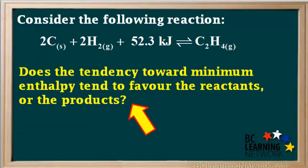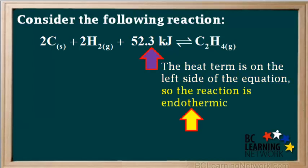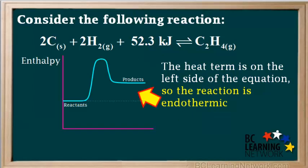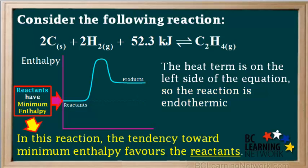Here's another example. Given this equation, will minimum enthalpy favor reactants or products? The heat term is on the left side of the equation, so this means the reaction is endothermic. We can sketch an enthalpy diagram for an endothermic reaction. In an endothermic reaction, the reactants have minimum enthalpy. So we can say that the tendency toward minimum enthalpy favors the reactants.